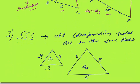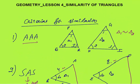Third is SSS. This is different from SSS of congruency, where all corresponding sides were equal. In this case, all corresponding sides are in the same ratio — for example, 2 and 4, 3 and 6, 4 and 8 are all double. So the corresponding sides are in the same ratio, and these two triangles are also similar. These three — AAA, SAS, and SSS — are the criteria to check whether triangles are similar or not. That was all about the basics of similarity of triangles. In the next lesson, I will discuss questions based on the similarity of triangles. Thank you.